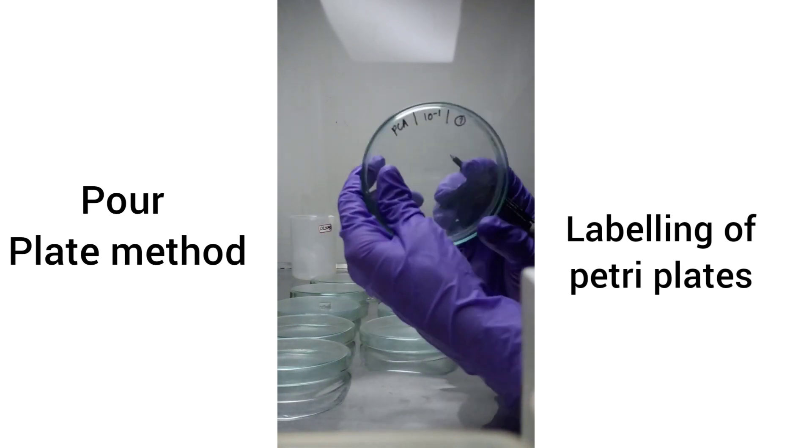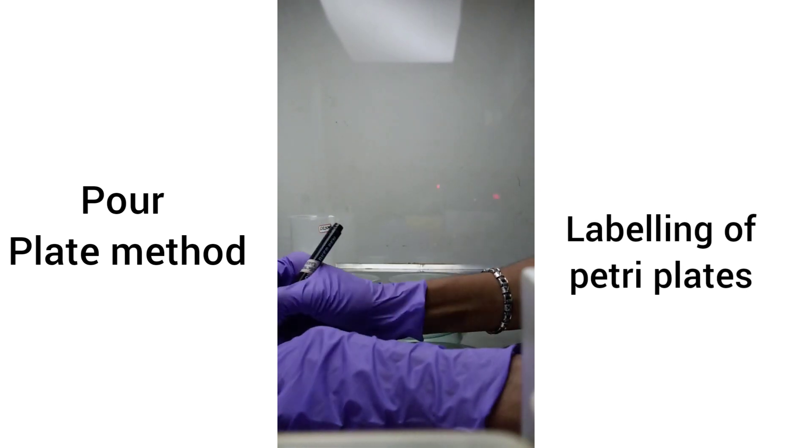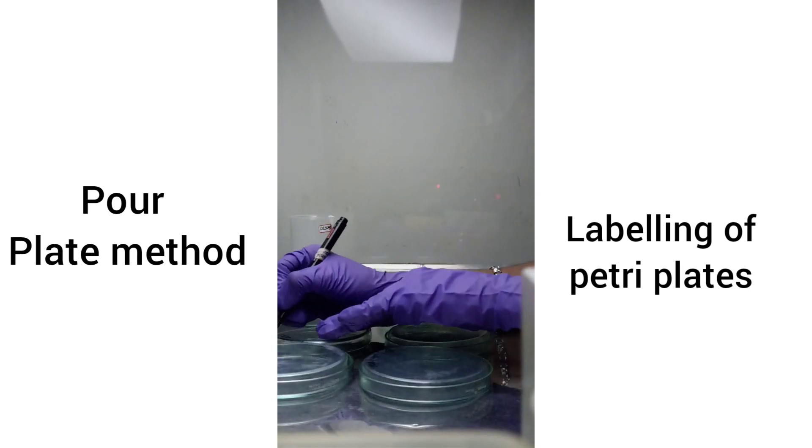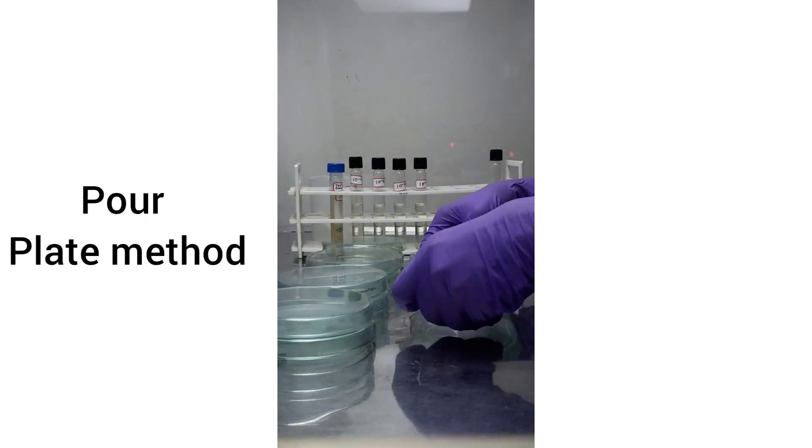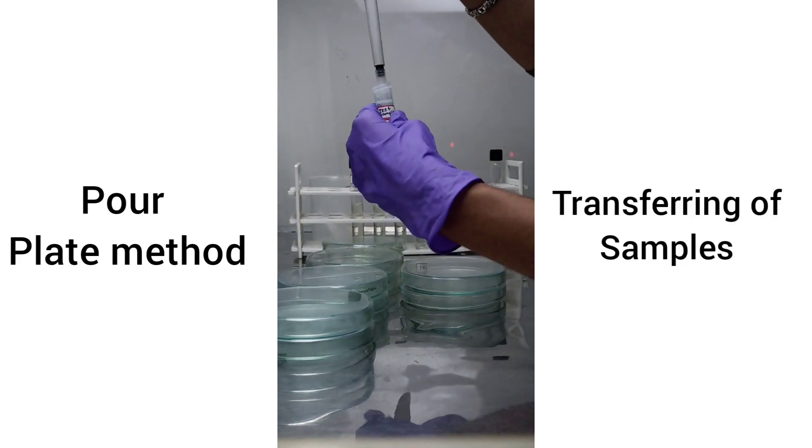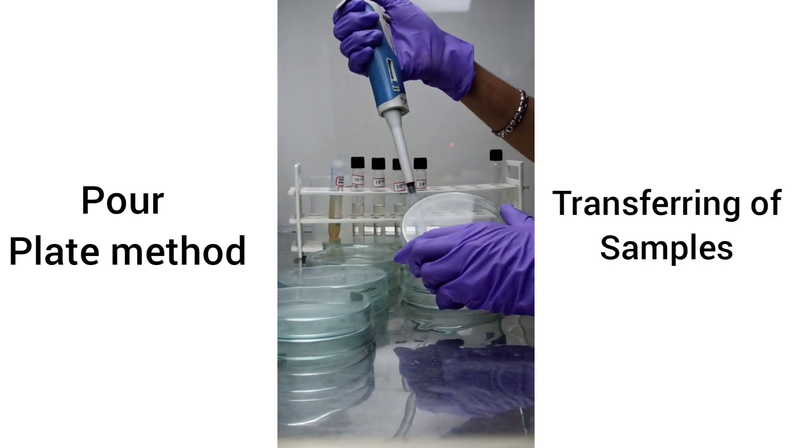Pour plate technique. Now label the plates from 10 raised to minus 1 to 10 raised to minus 5. We are going to perform duplicate sets. After labeling of plates, transfer 1 ml of sample from each dilution to the labeled petri plates accordingly.